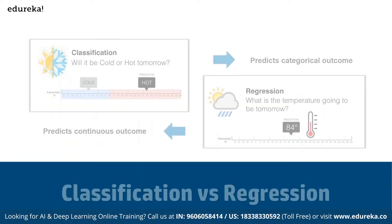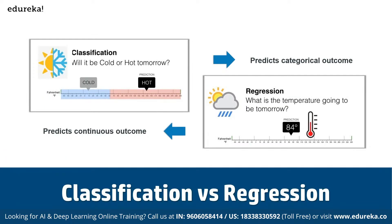In terms of algorithms, we have two different types: binary classification and multi-class classification. Comparing classification with regression: classification predicts categorical outcomes, like whether it will be hot or cold tomorrow, while regression focuses on continuous outcomes, such as predicting the exact temperature tomorrow.